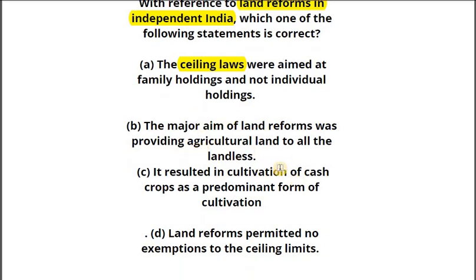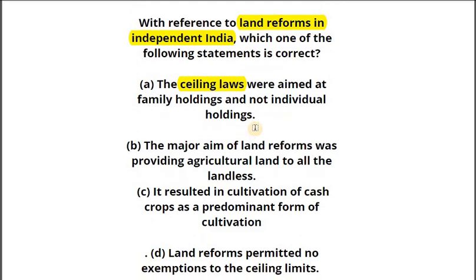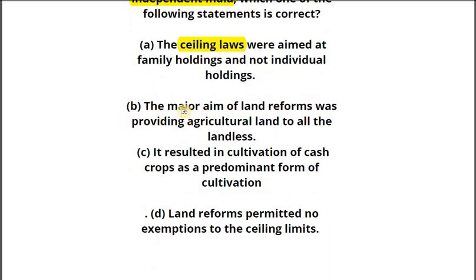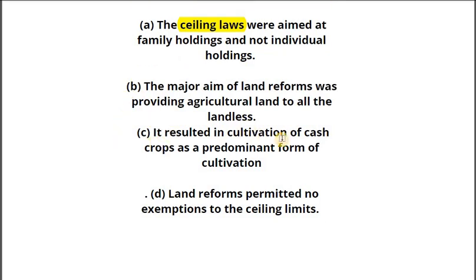Option A says ceiling limits were aimed at family holding and not individual holding — this is something we just have to know. Option B says the major aim of land reforms was providing agricultural land to all the landless — this indeed was one of the aims. Option C says it resulted in cultivation of cash crops as a predominant form of cultivation — this is absolutely incorrect. Post land reform, we actually had more area under food crop cultivation and not cash crop cultivation.